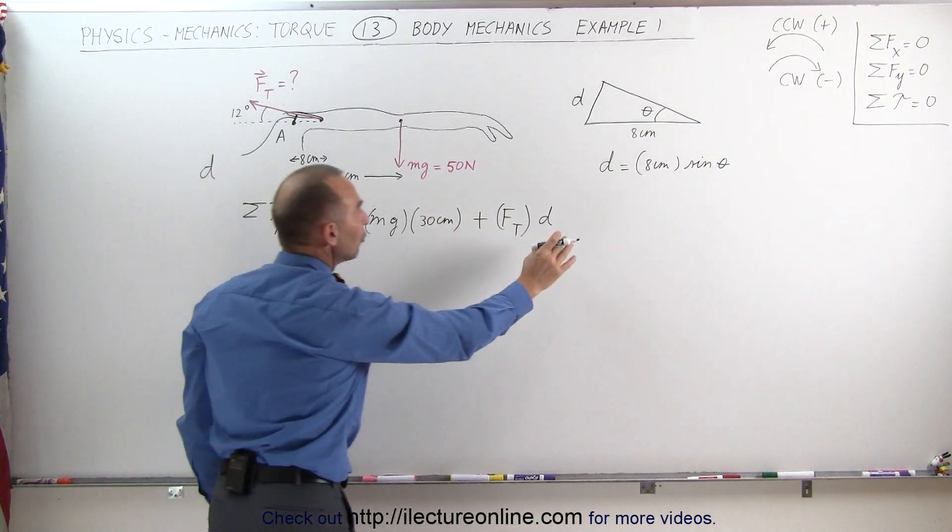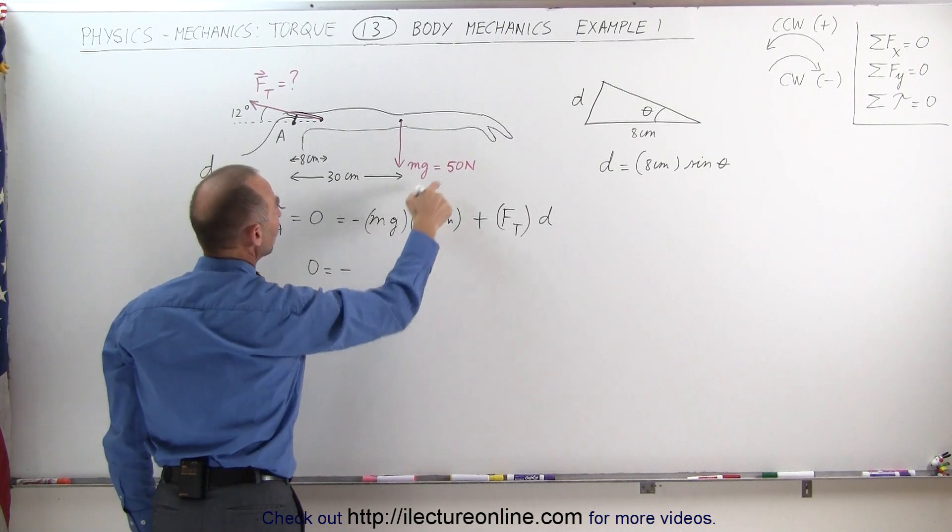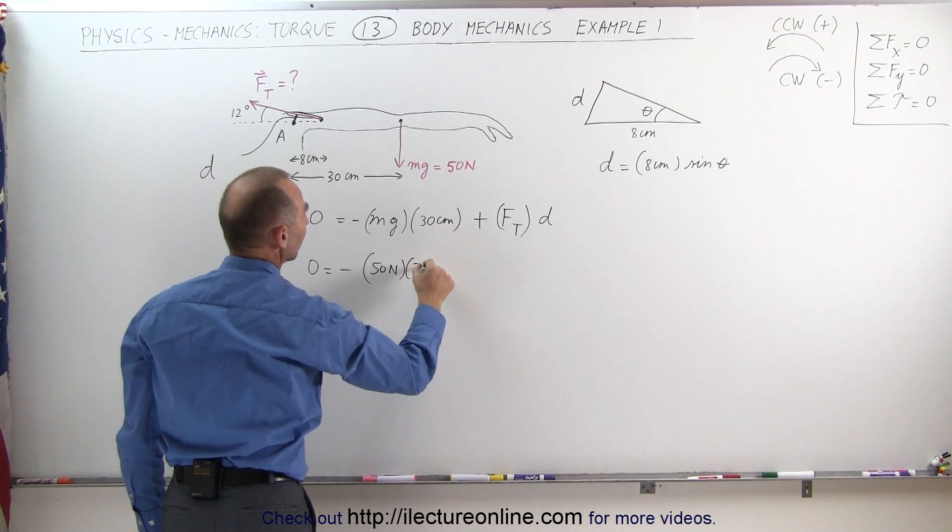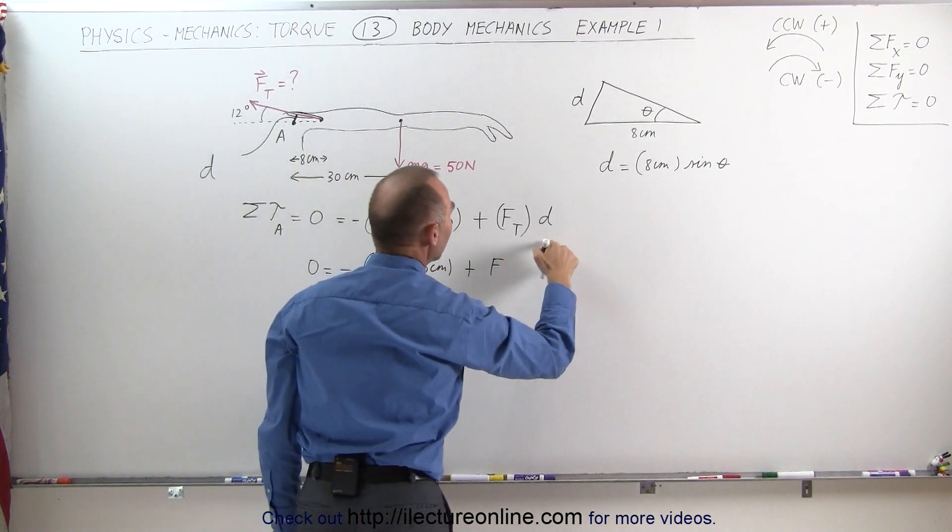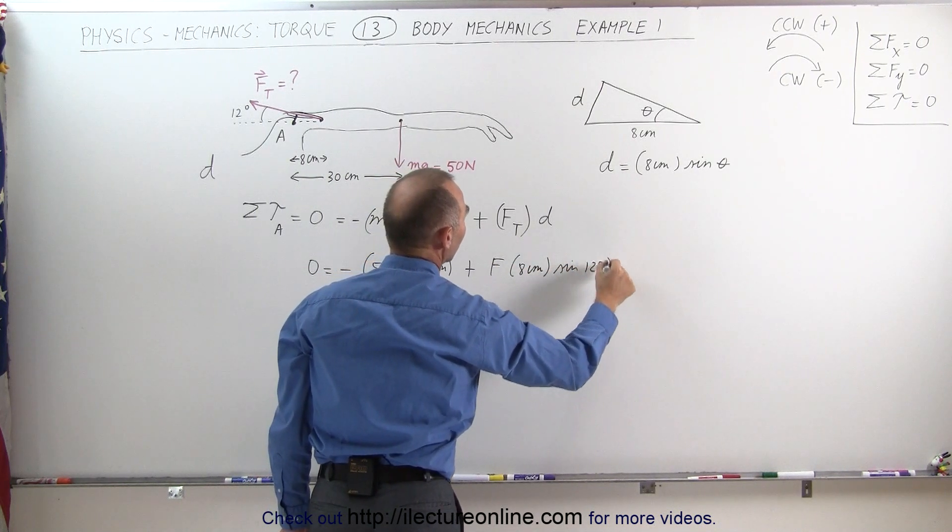Let's now plug that into our equation right here. We get zero is equal to minus mg, that would be 50 newtons, times 30 centimeters, plus the unknown force times D, which is 8 centimeters times the sine of 12 degrees.